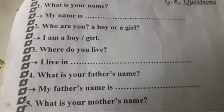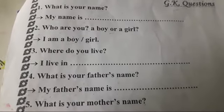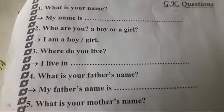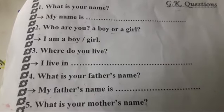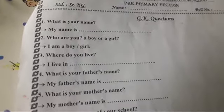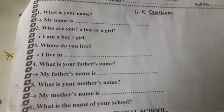Next: who are you? A boy or a girl? I am a boy. Jo boy hai, woha bataenge: I am a boy. O jo girls hai, woha bataegi: I am a girl.